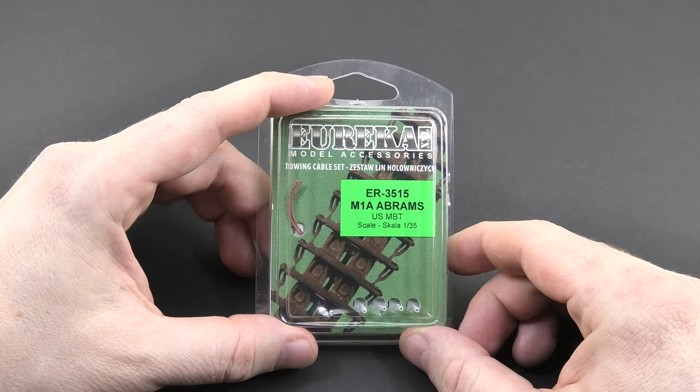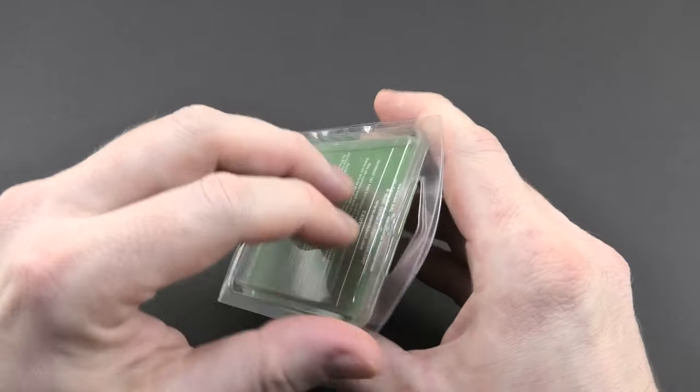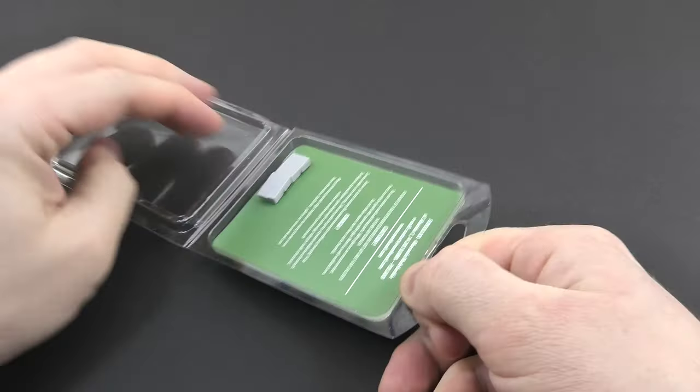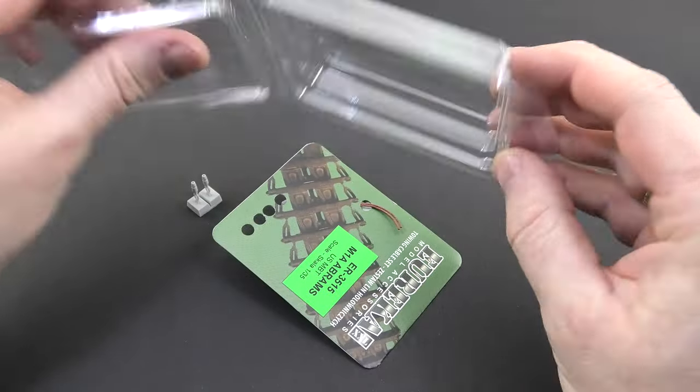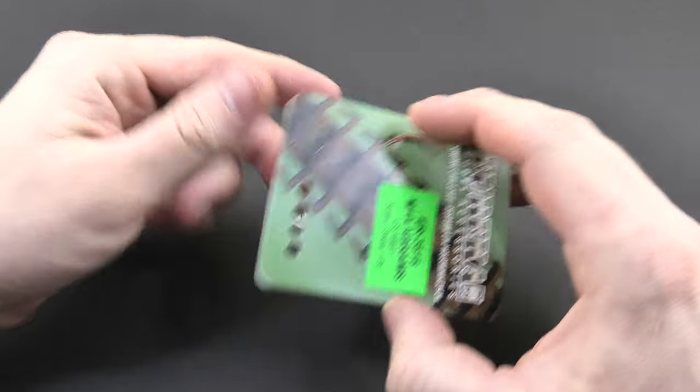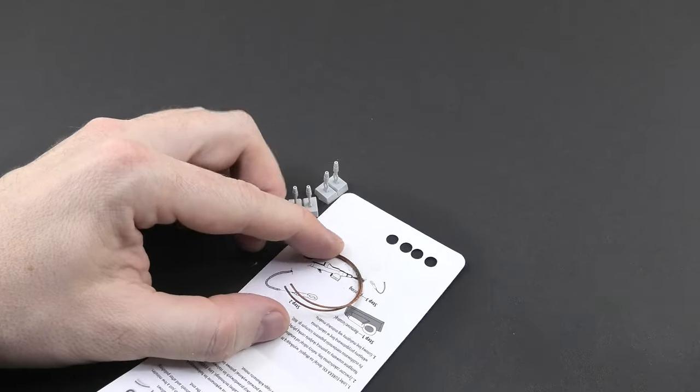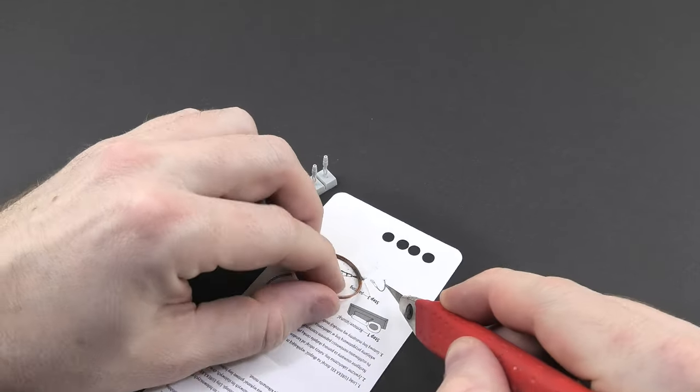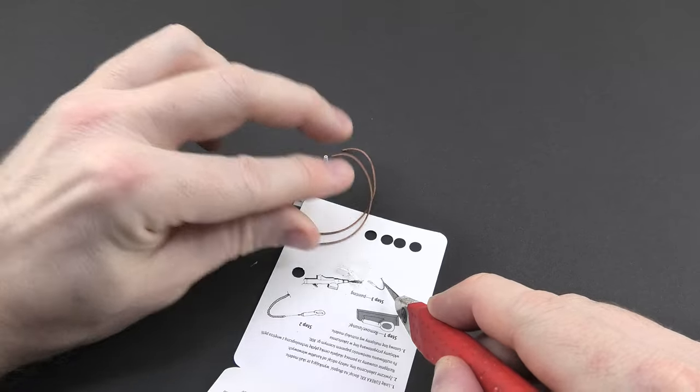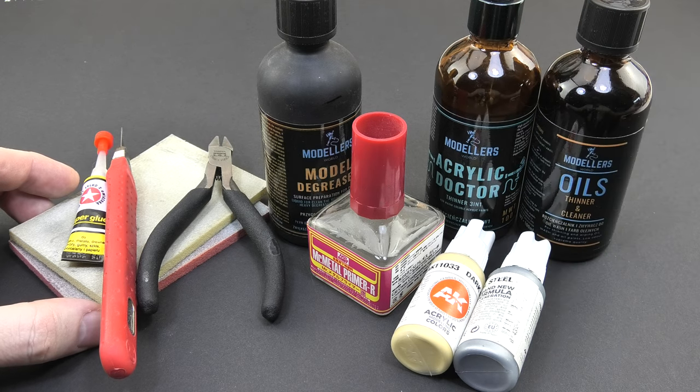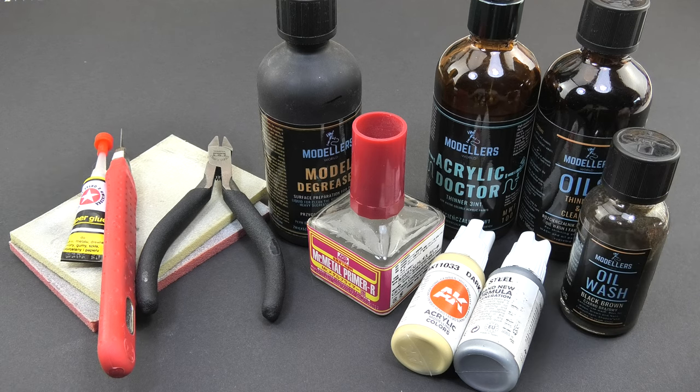For the beginning the Abrams rope which is also used in other vehicles so its use is very wide. This will be the version let's call it clean which means without mud or other dirt. Just a rope hanging on the vehicle. On this example I will show you exactly how to work with Eureka XXL products from the very beginning to the end. And here we have a set of tools and products which are needed to complete this stage.